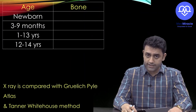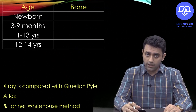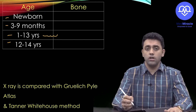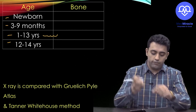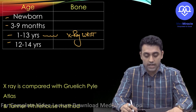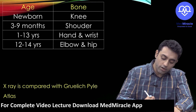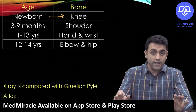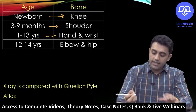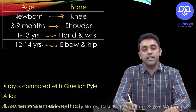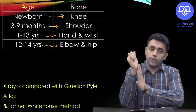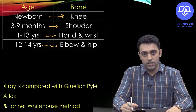Which X-ray should you order depending on the child's age? For a newborn, get an X-ray of the knee. For three to nine months, get a shoulder X-ray. For one to thirteen years, use the hand and wrist X-ray. For twelve to fourteen years, use the elbow and hip. This is the age-based guide for bone age estimation.